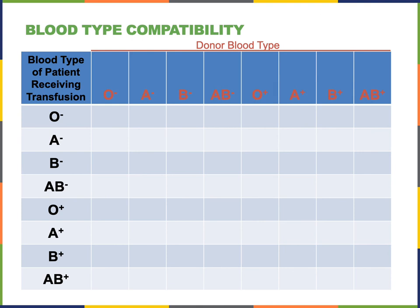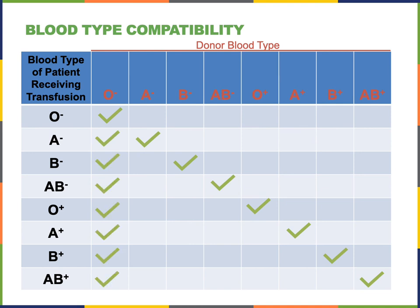If we give a patient a transfusion of donor blood that is the same type, that will always be safe, so we can fill in diagonally for the corresponding same blood type. It will also always be safe to give a transfusion of O negative blood because O negative blood doesn't contain any of these antigens. However, there's a limiting supply of O negative blood, and we must prioritize it for patients that are O negative, because a patient that is O negative can only receive a transfusion of O negative blood — any of the other blood types could cause a transfusion reaction.